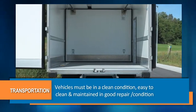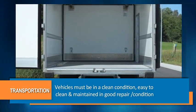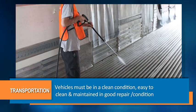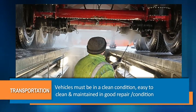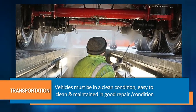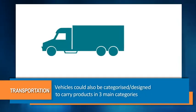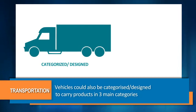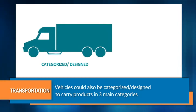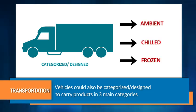Vehicles used for food transport must be in a clean condition, easy to clean, and maintained in good repair and condition to protect foodstuffs from contamination. The vehicles can be categorized and designed to carry products in three main categories: ambient, chilled and frozen.